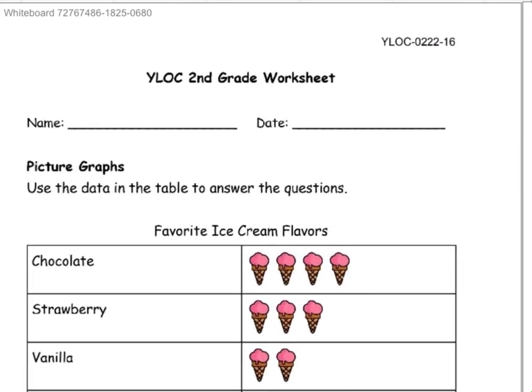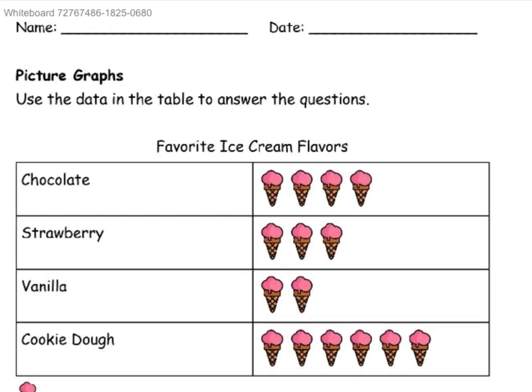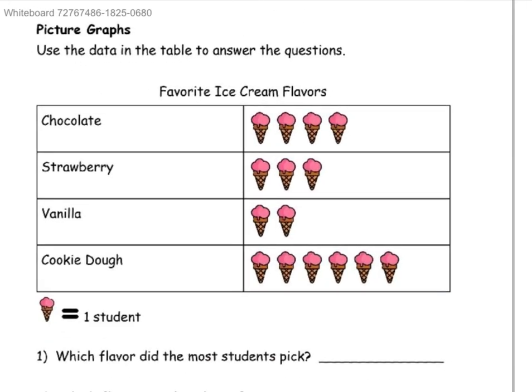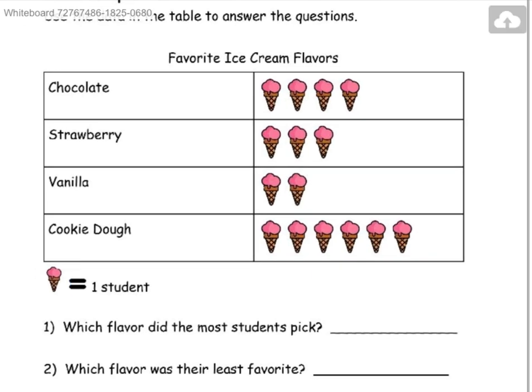Hello, this is Jasmine Kim for second grade lesson 16, picture graphs. Use the data in the table to answer the questions. Favorite ice cream flavors: chocolate, strawberry, vanilla, and cookie dough. One ice cream would be equal to one student.